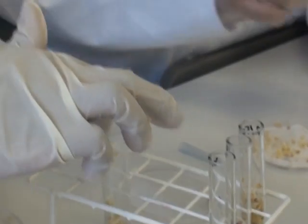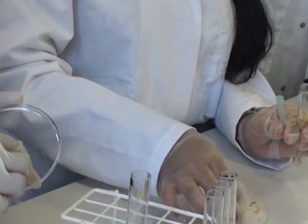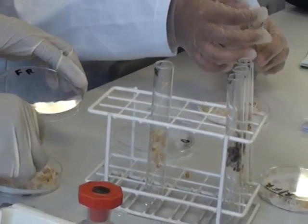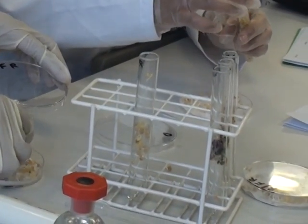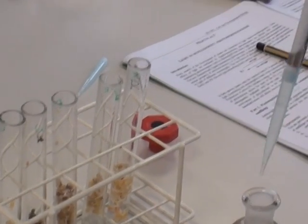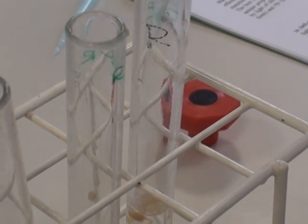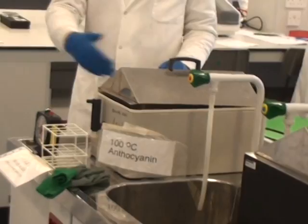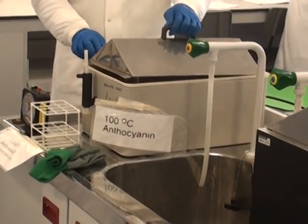To examine the anthocyanin production, we first count out 20 seedlings of each of the different treatments and put them into a test tube. Then add isopropanol water mixture which is going to extract the soluble anthocyanin pigments.